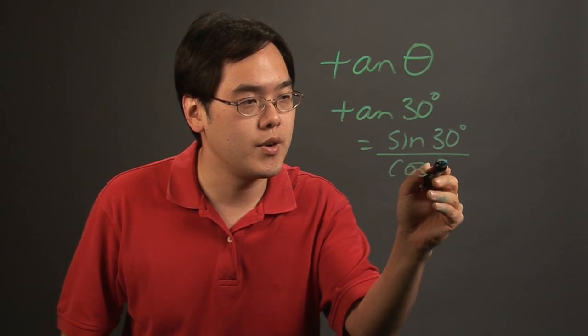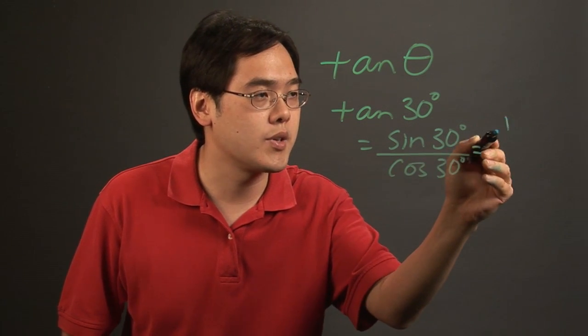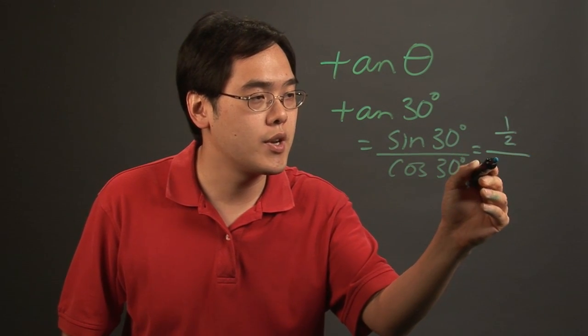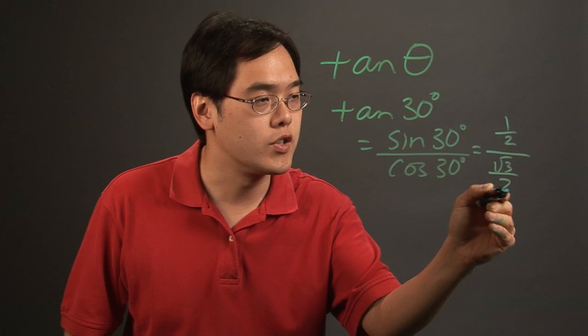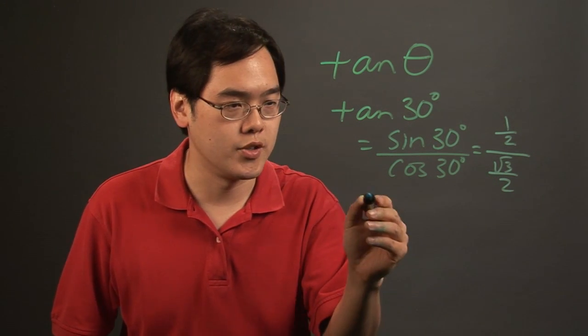And so sine of 30 degrees is one-half, cosine of 30 degrees is square root of 3 over 2. And then just use the arithmetic laws and you should be good to go.